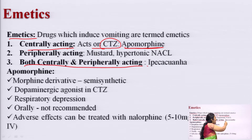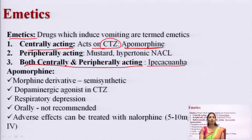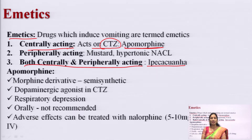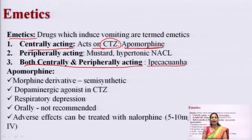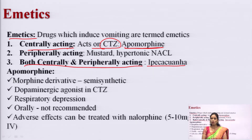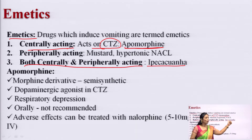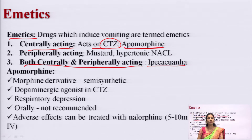Ipecacuanha is the drug which falls under both central and peripheral acting emetics. To summarize: apomorphine acts centrally, mustard and hypertonic sodium chloride act peripherally, and ipecacuanha acts both centrally and peripherally to induce vomiting.